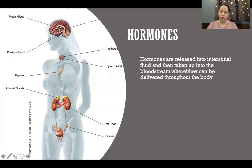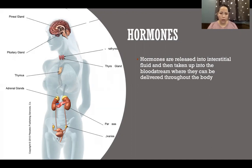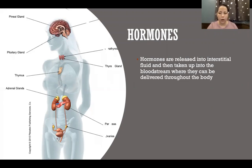Hormones are released into interstitial fluid and then taken up into the bloodstream where they can be delivered throughout the body. A hormone is a chemical secreted by a gland out into the interstitial fluid — the fluid outside the cell within a tissue, between cells. From that fluid, it's taken up into the bloodstream and then travels to wherever it needs to go.